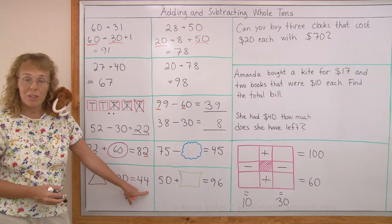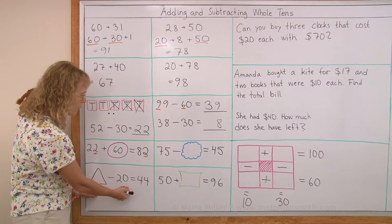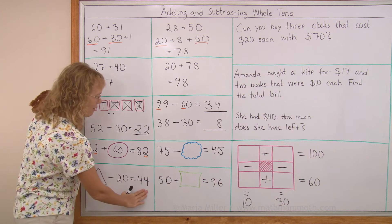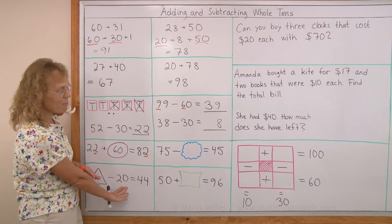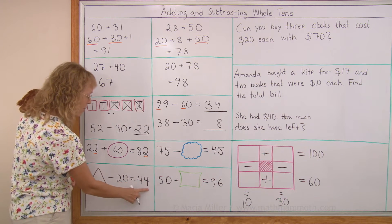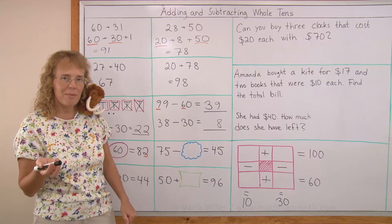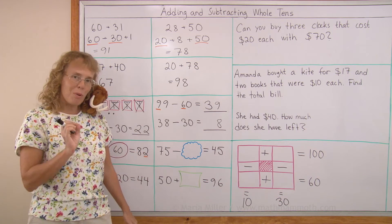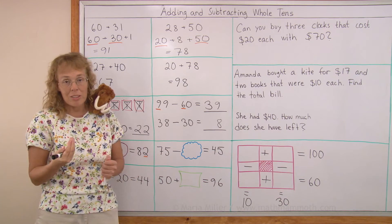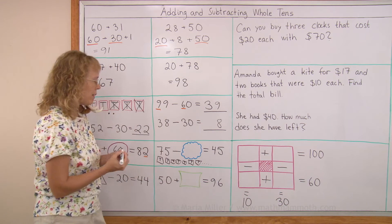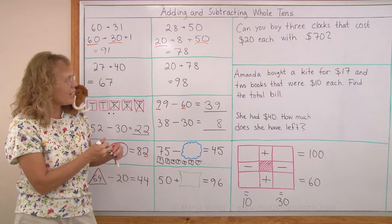What number, if you take away 20, leaves you 44? You can think backwards: take what you have left and imagine you add back those 20 that you took away, and then you get what you had originally. 44 plus 20 — that would be 40 and 20 and 4; 40 and 20 is 60, and then we have the 4: 64. Next: 75 minus how many leaves 45? You have 75, and what do you take away so you have 45 left? You could draw a model — 7 tens and 5 little dots. You take away 3 tens.